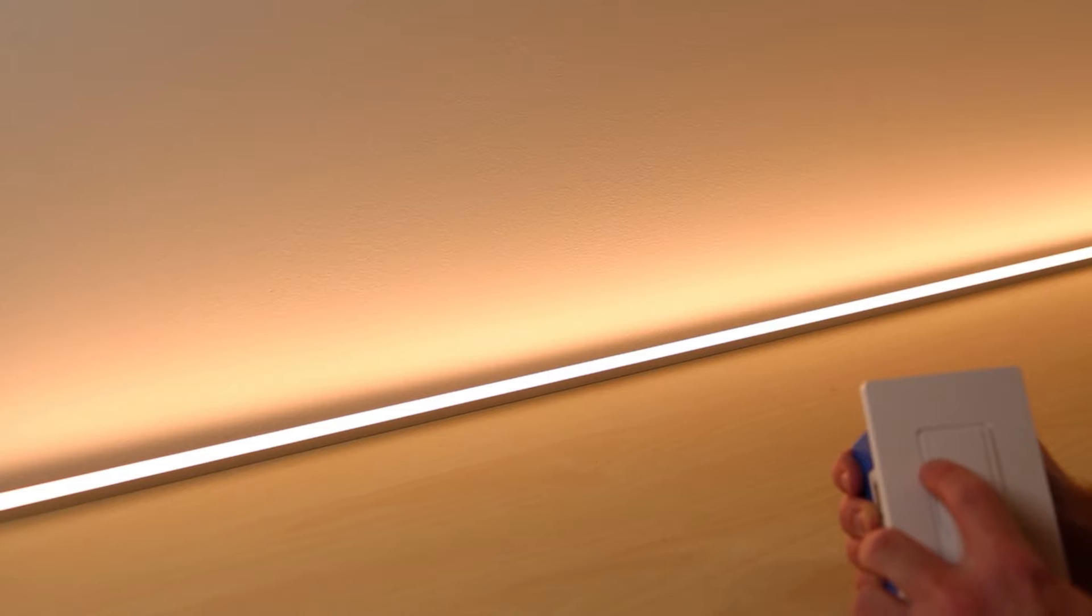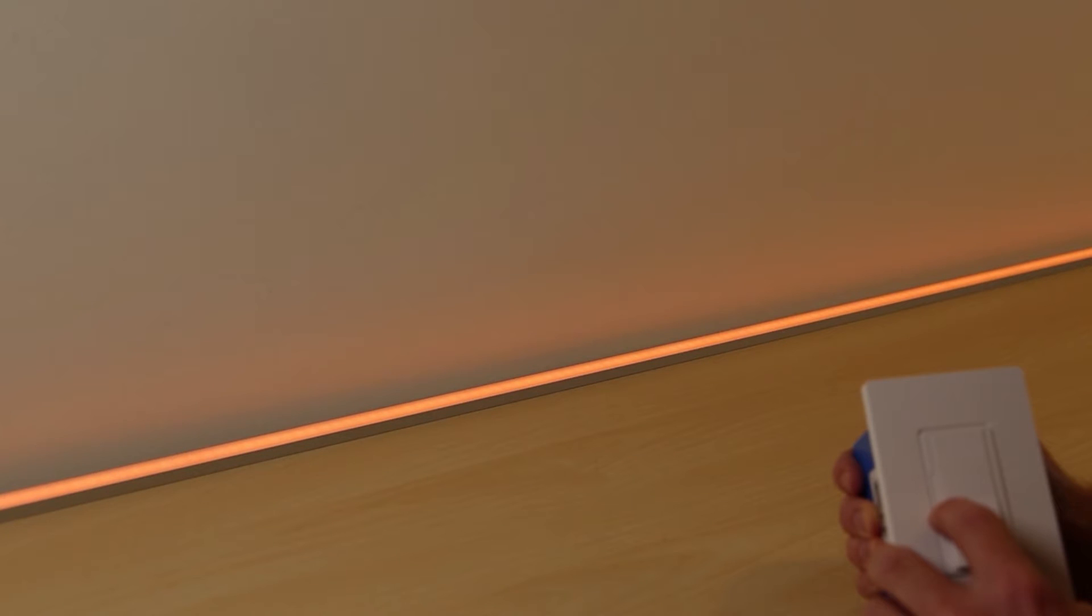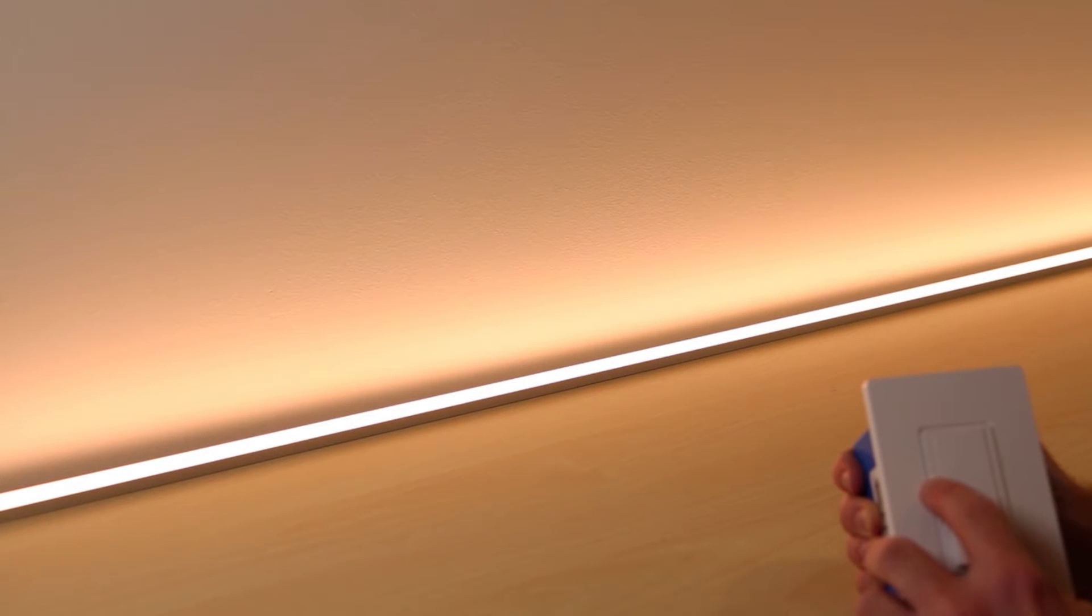Now what dim to warm means is that as you dim the light, it automatically warms from a 3000 Kelvin temperature white light down to that nice candle light at 1800 Kelvin. And then as you increase the brightness using a standard dimmer, it goes from that warm candle light back up to that white light.